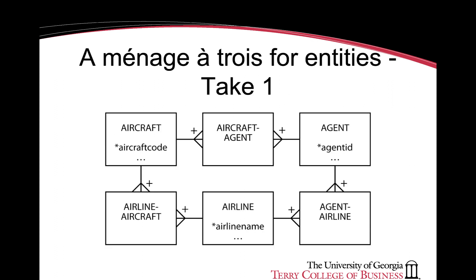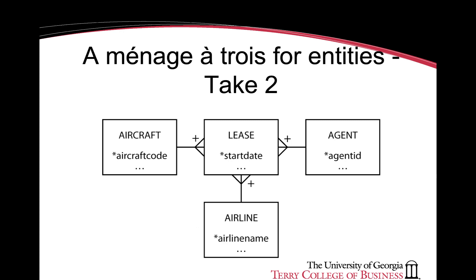One of the entity relationships you might find is several entities joined by associative entities. In this case, aircraft, agent, and airline have many-to-many relationships amongst themselves. This can be simplified by creating one associative entity that holds the primary keys of aircraft, agent, and airline together as a composite primary key. The plus sign at the end of the crow's foot indicates that these are identifying relationships. The primary key of lease is aircraft code, agent ID, airplane name, and start date together.